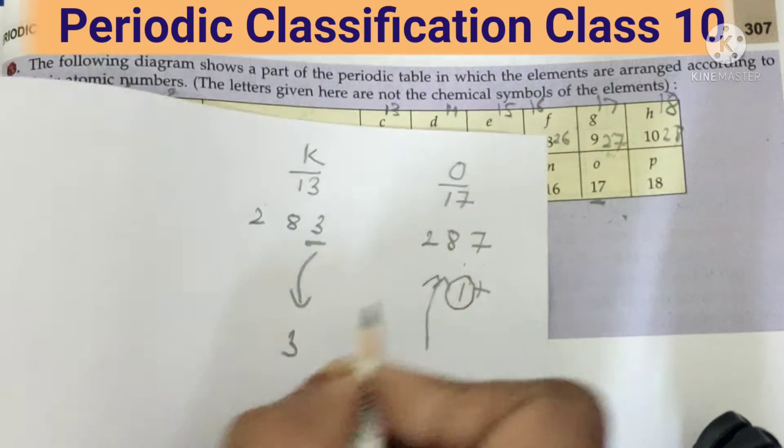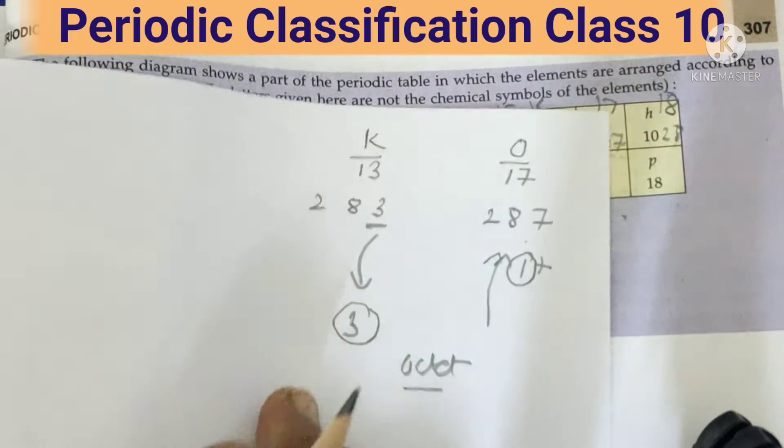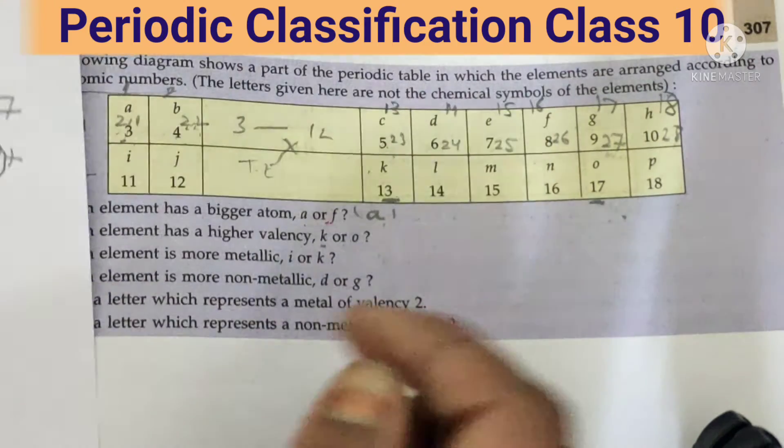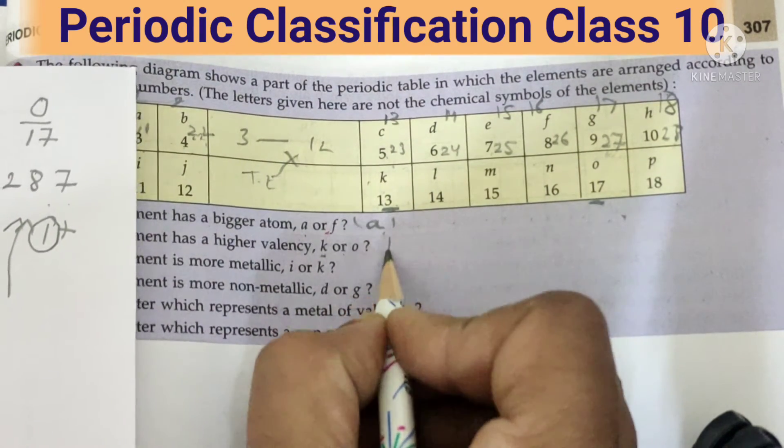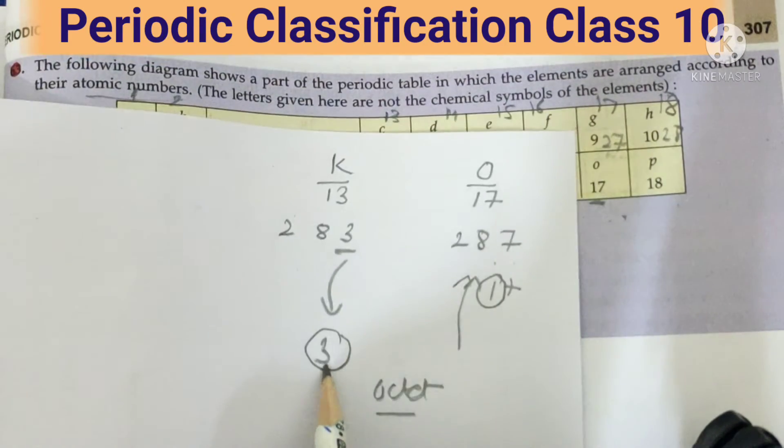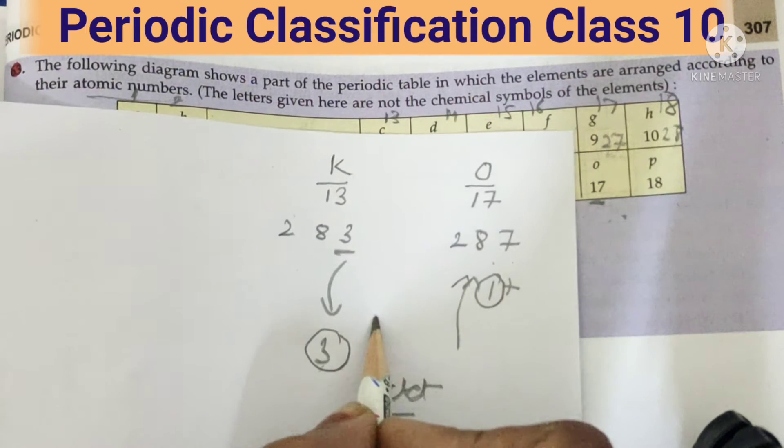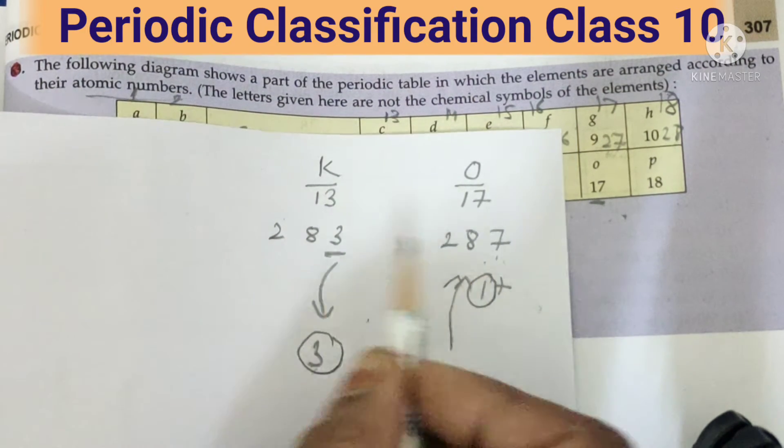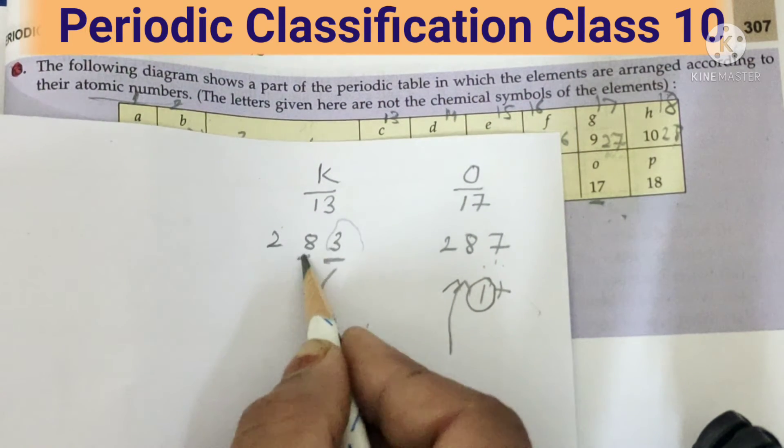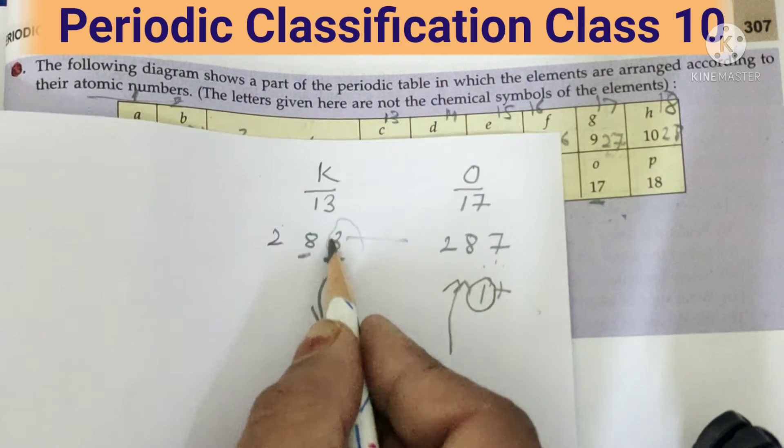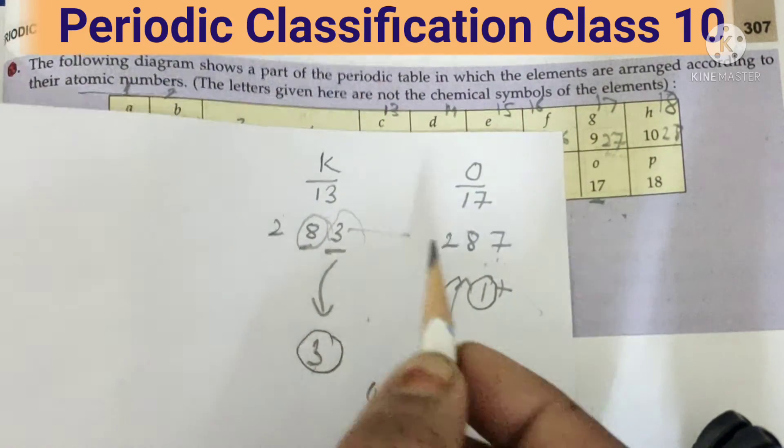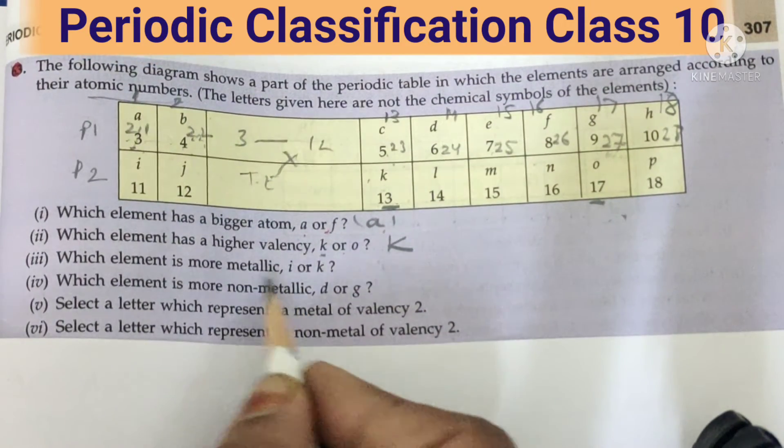So my correct answer is K. K has a valency three. Why? Because it donates three, accept one. Why? To complete their octet. When you give up three, then the last shell is eight electrons. Come to the next one.